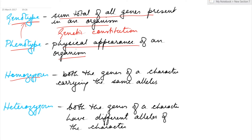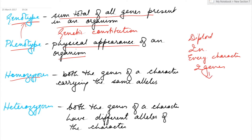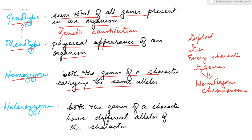Now, as we are all diploid, we have two sets of chromosomes. For every character, we have two genes present on the homologous chromosomes. When the two genes of a character carry the same allele, they are said to be homozygous for that character. We also use the term 'pure' for homozygous. Heterozygous means the two genes of a character have different alleles — they are said to be heterozygous, and the term used for heterozygous is 'hybrid'.